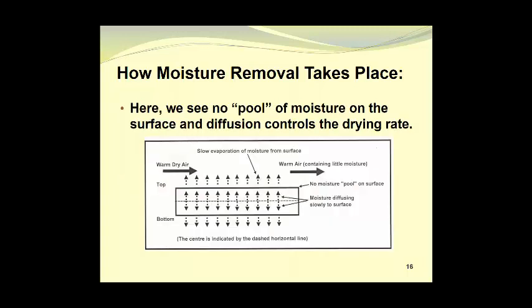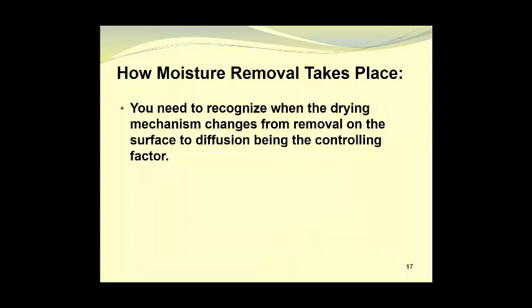In this diagram, we see that there is no pool of moisture on the surface and diffusion will control the drying rate. So taking a look at the diagram, please note that there is no moisture pool on the surface and the slow evaporation of moisture from the surface is due to the slow diffusion of moisture from the inner portions of the material being dried. You need to recognize when the drying mechanism changes from removal on the saturated surface to diffusion being the controlling factor. This is called the critical moisture content.